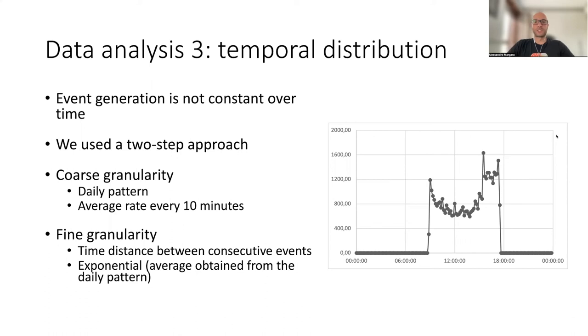At a fine granularity, the time distance between consecutive events follow an exponential distribution, where the average is obtained by the daily pattern, but within each window of 10 minutes in the daily pattern, there are significant differences in the trends. So there is an exponential distribution that models these differences.